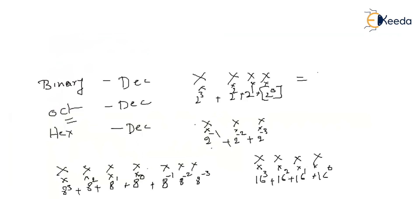When there is a hexadecimal point, the weights after it are 16^(−1), 16^(−2), 16^(−3). Everything should be added to form the final result. This is how any number system is converted to the decimal number system.